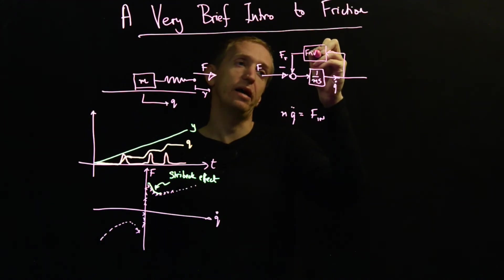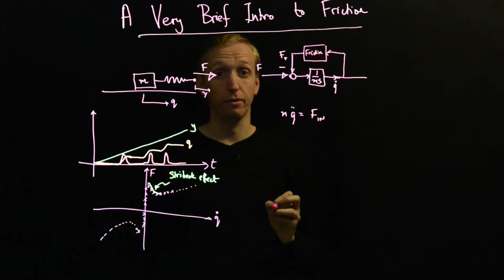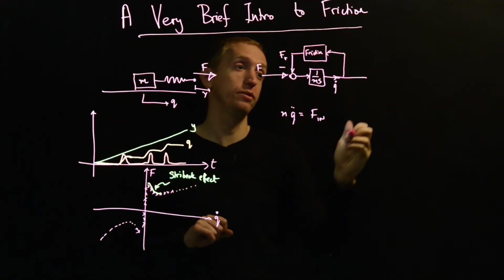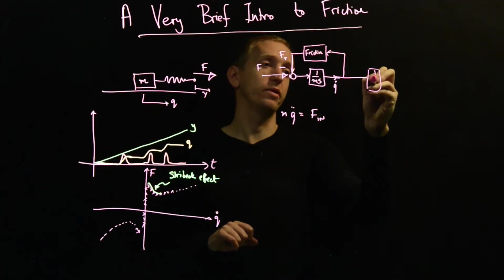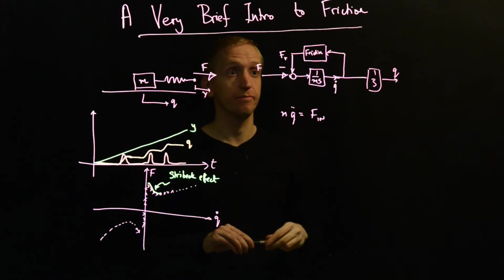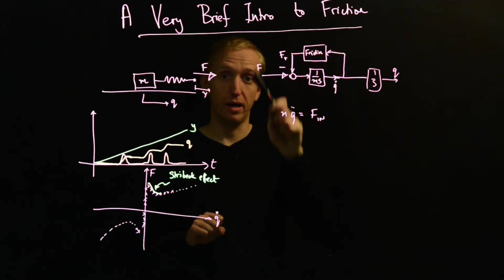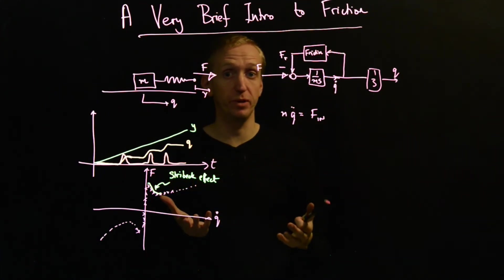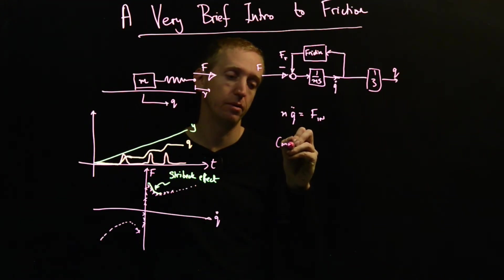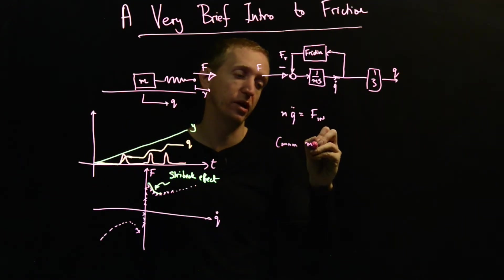So a typical model for friction in this setup would be something like this. Here we have our friction block - our static nonlinearity modeling friction. And then if we put a 1 over s in here, we could get the position of the mass. So this is the typical way that friction would be built into these kinds of models.